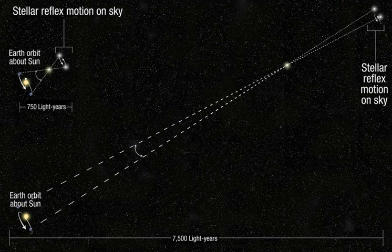The open stellar cluster Hyades in Taurus extends over such a large part of the sky — 20 degrees — that the proper motions as derived from astrometry appear to converge with some precision to a perspective point north of Orion. Combining the observed apparent angular proper motion in seconds of arc with the also observed true receding motion as witnessed by the Doppler redshift of the stellar spectral lines allows estimation of the distance to the cluster and its member stars, in much the same way as using annual parallax.